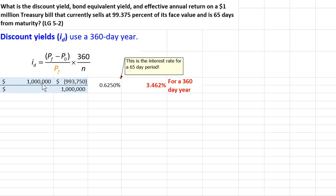So how do we do it? We simply calculate the amount of interest, which is simply the amount we get at maturity, the million, minus the amount we paid. So we basically earned $6,250 in interest on a million-dollar face value.